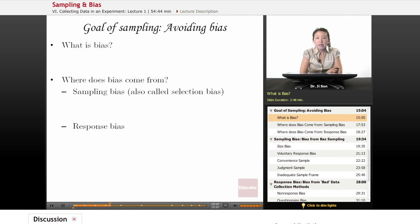Let's talk about the goal of sampling. The big goal of sampling, whenever you're trying to do sampling, is to avoid bias. We want to avoid bias.